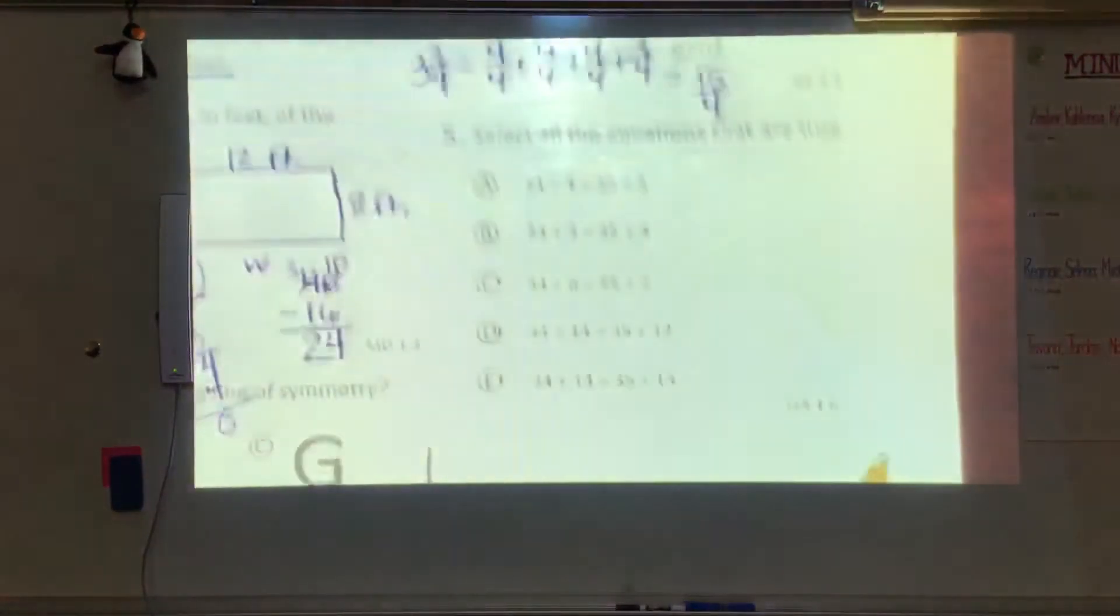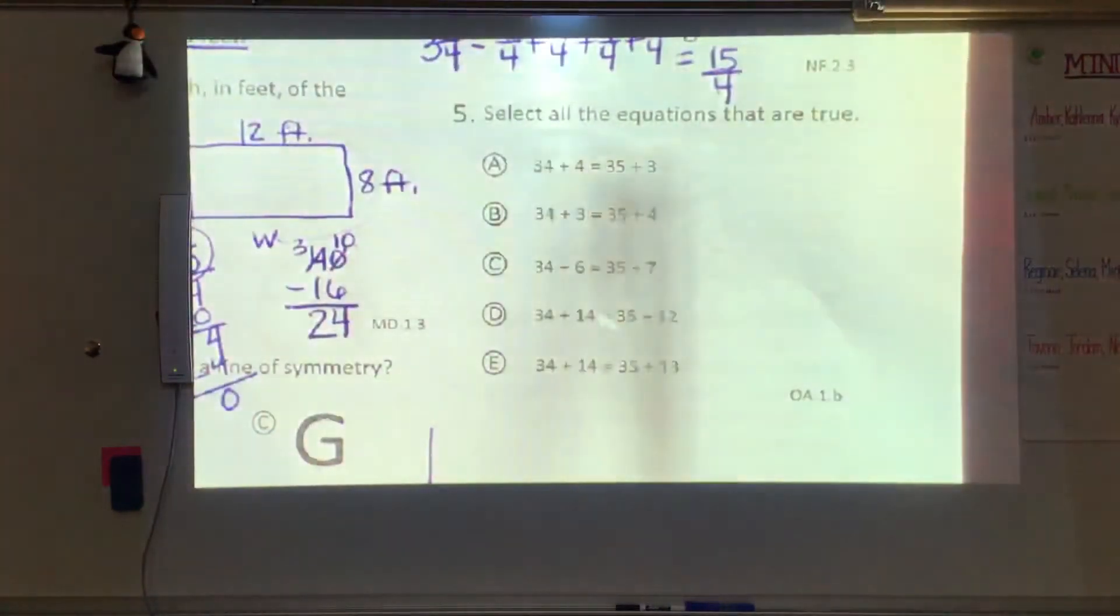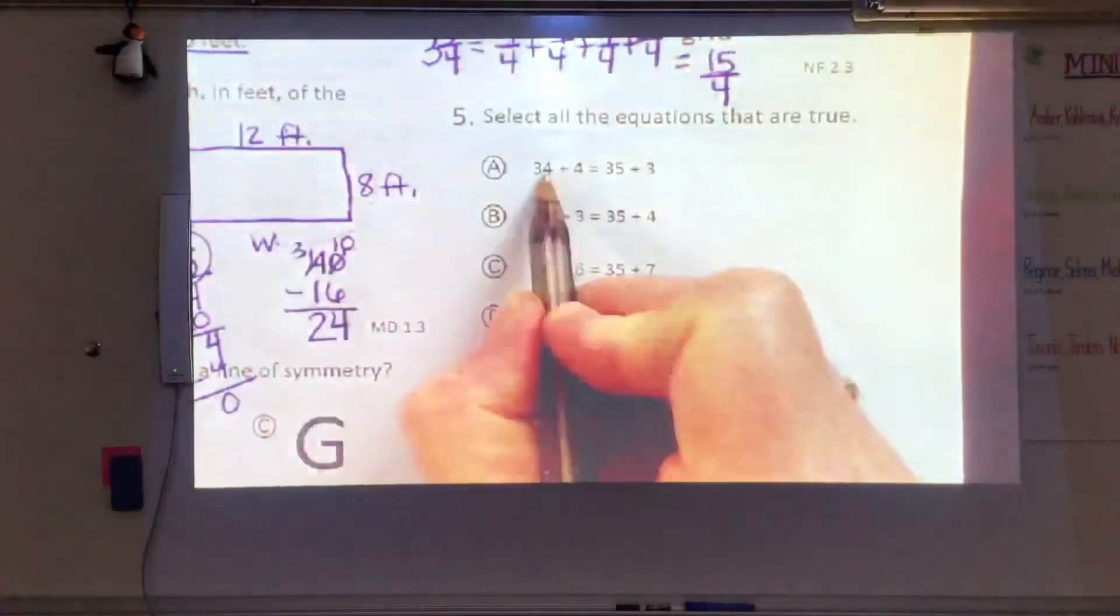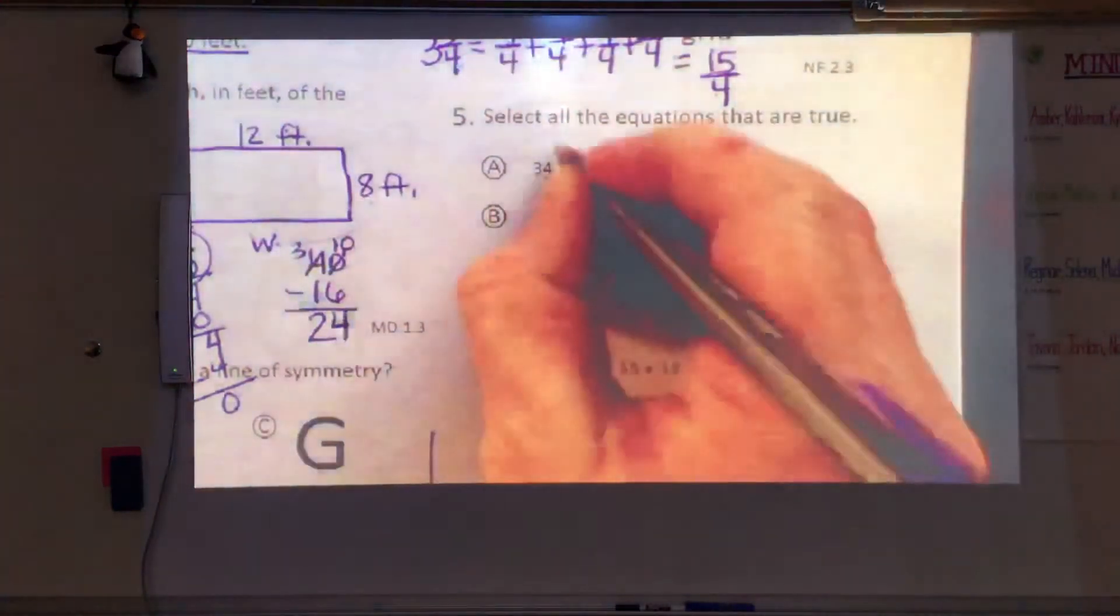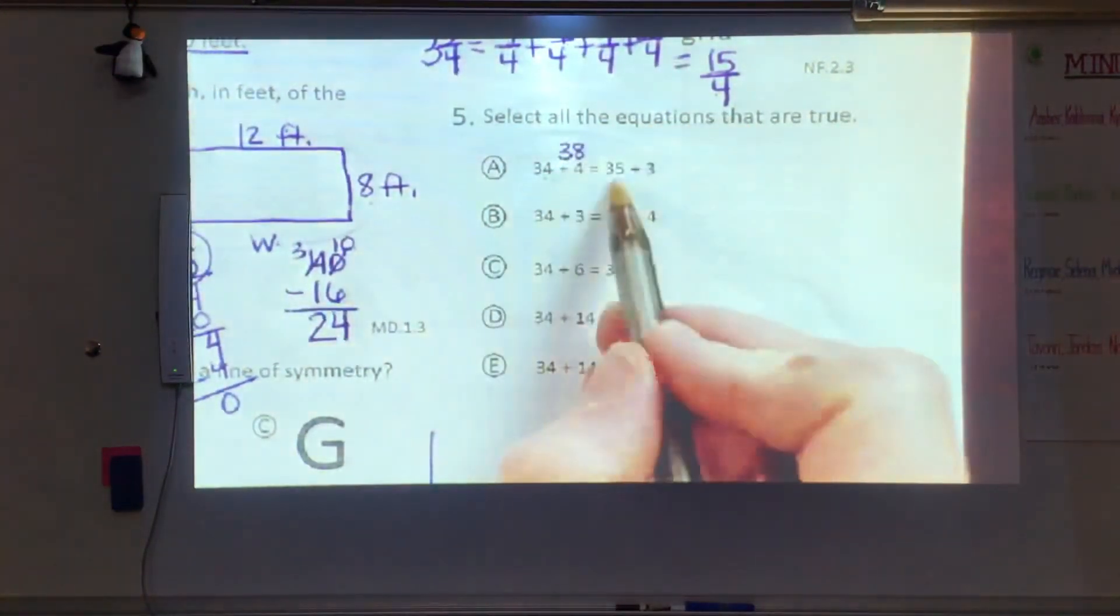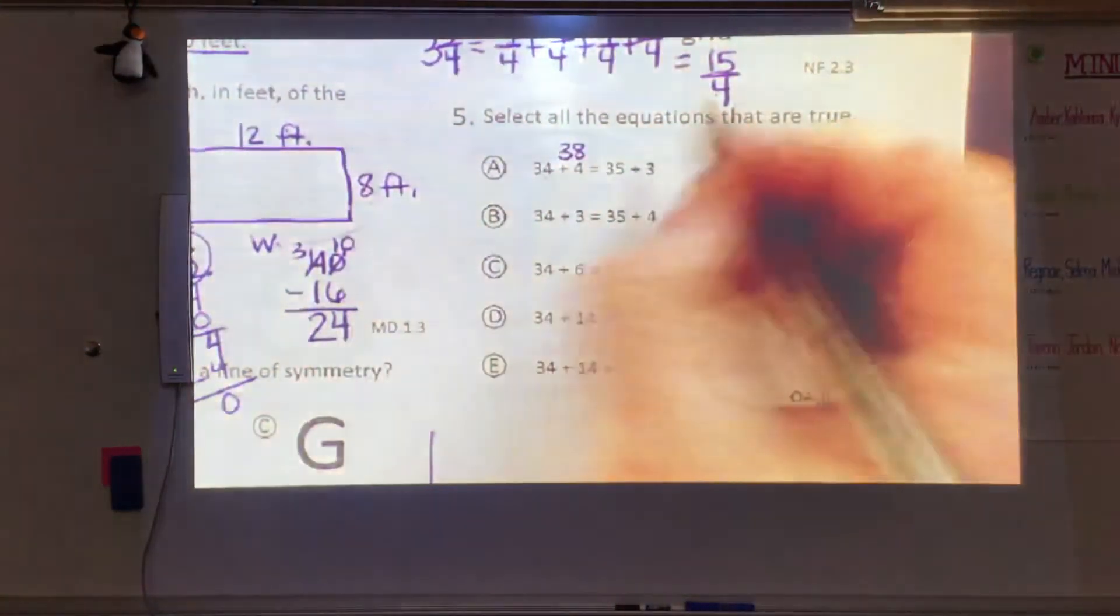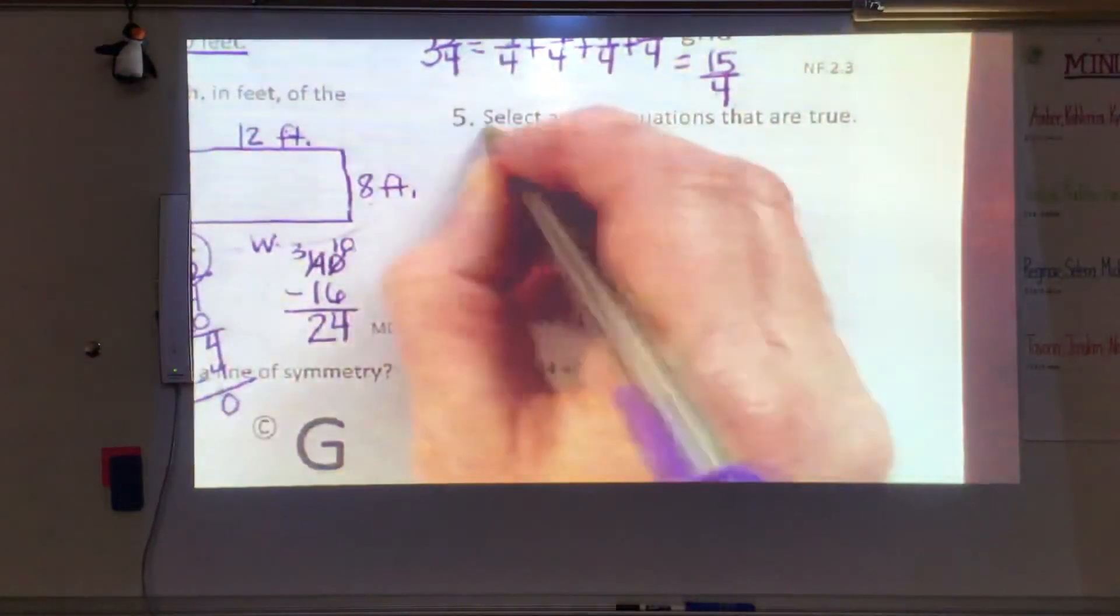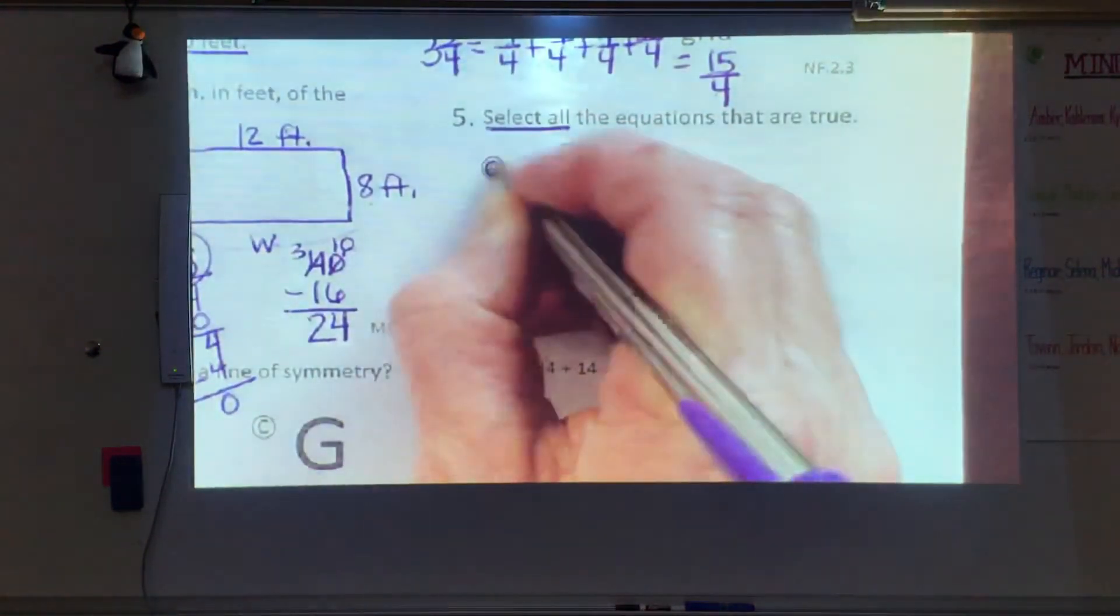Alright, let's move to our last one for today. Select all the equations that are true. Alright, we've got equations on both sides of the equal sign. So we're going to solve both. 34 plus 4 more would be 38. 35 plus 3 more is also 38. Those are equals. So select all tells me there's going to be more than one then. So we have to keep going.